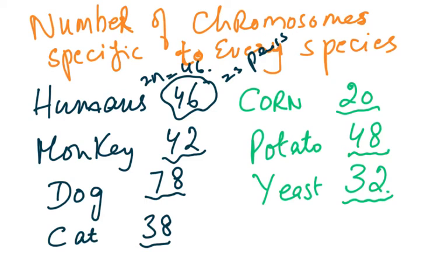You usually refer to 46 all the time, but please remember that's only in humans. If in the exam there's a question on some other species — maybe fruit flies, a potato plant, or a corn plant — this specific number would be specified, or you must understand the chromosome number is going to be different. The chromosome number is specific for every species.